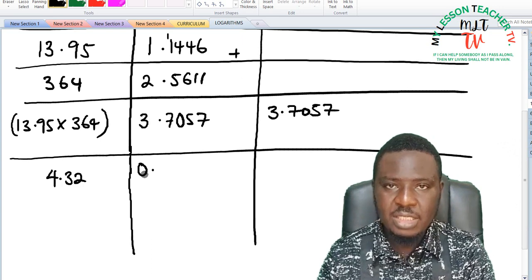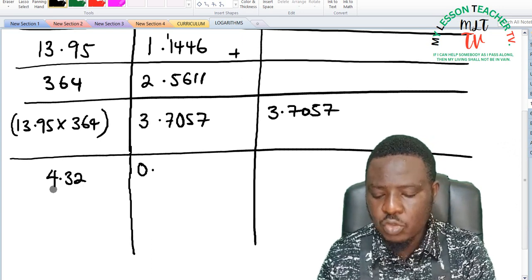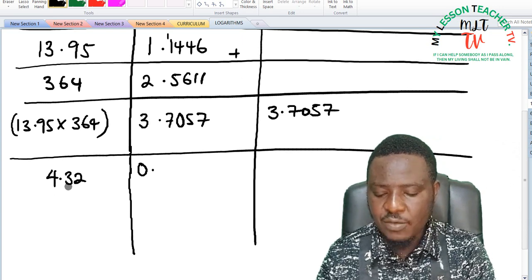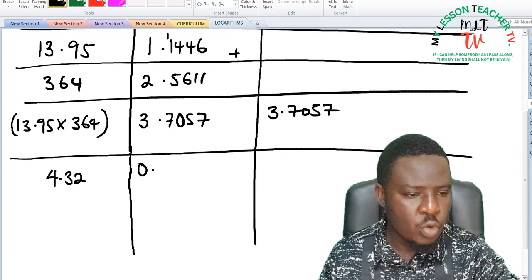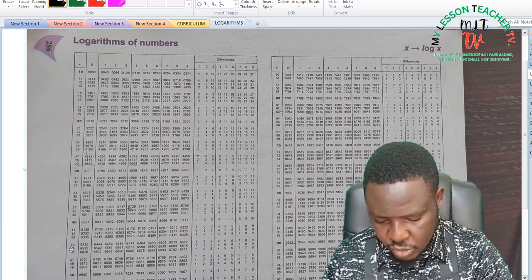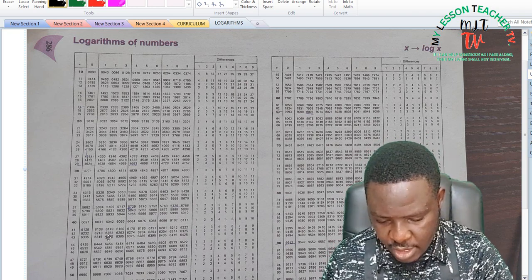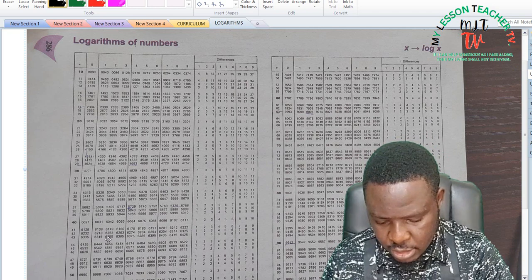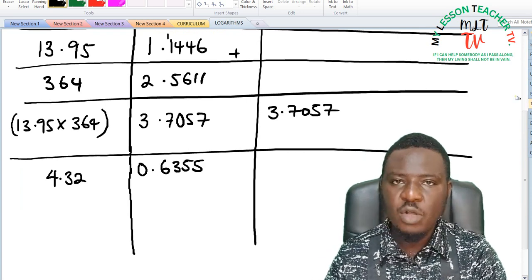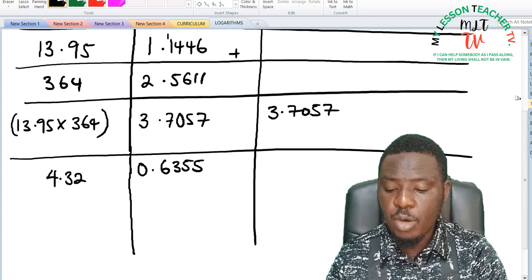So the characteristics is 0. The mantissa is going to be read from the log reading table when we look at 43 under 2. So going to 43 under 2, we have 43 under 2 is somewhere here, this is 43 under 2 is 6355.